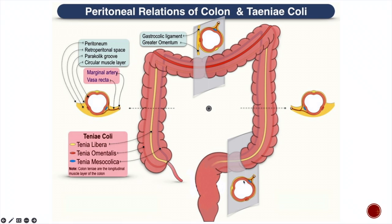An important thing to notice in the case of sigmoid colon: the sigmoid colon is in continuation with the descending colon. When it gets rotated because of being suspended downwards, it gets folded downwards and inwards. Tinea Mesocolica stays posteriorly toward the mesenteric border. But Tinea Libera in the sigmoid colon lies anterosuperiorly, while Tinea Omentalis comes to lie anteroinferiorly. You can compare these relations of the three tinea in the transverse colon, sigmoid colon, and ascending and descending colon.